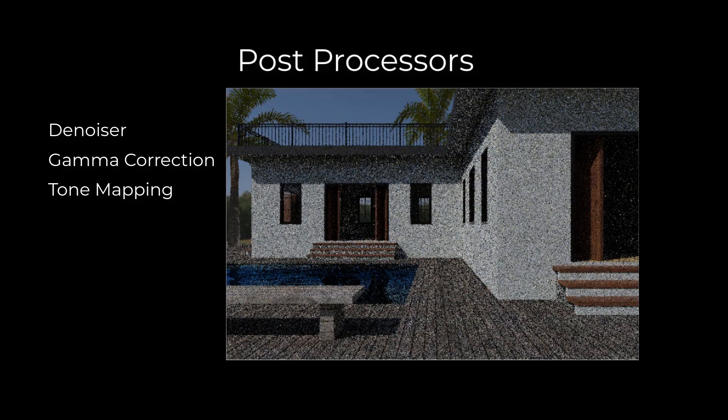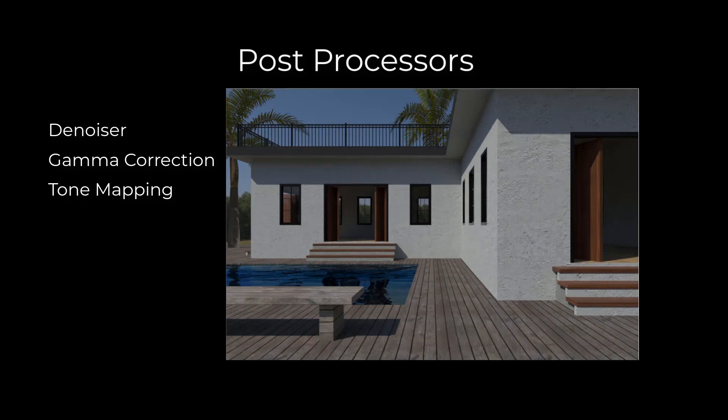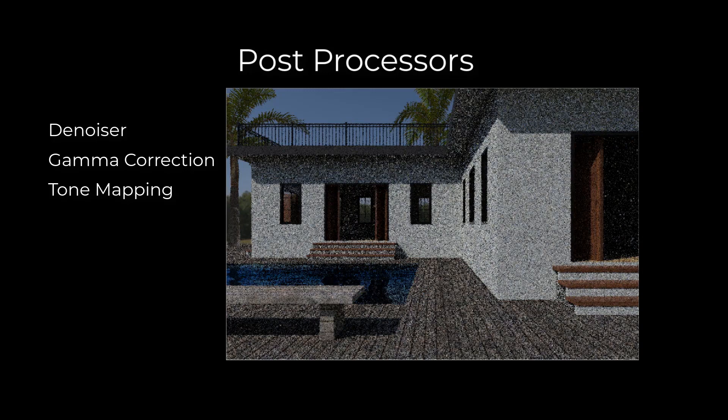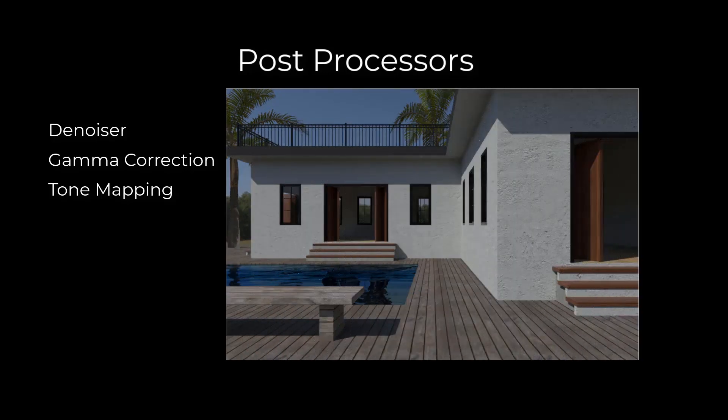Options also exist to adjust the final image result through post-processing. These include gamma correction to adjust contrast, tone mapping to rebalance light, and denoisers to reduce fireflies and reduce overall rendering time.